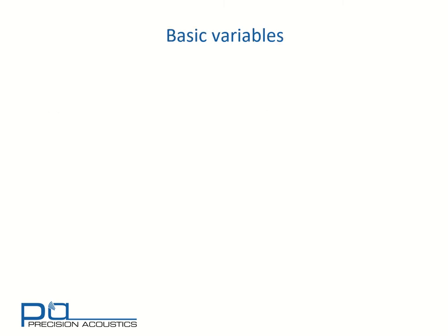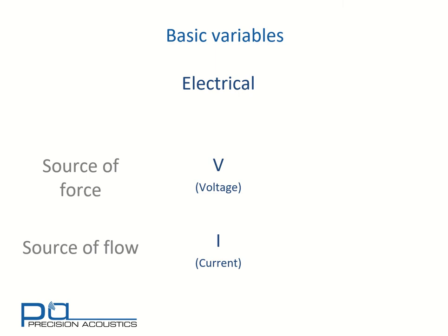We'll begin by looking at our basic variables and in each domain we have a source of force and a source of flow. In the electrical domain we note that voltage is sometimes referred to as electromotive force and a flow of charged particles is a current. Mechanically we have force directly and our source of flow is particle velocity.